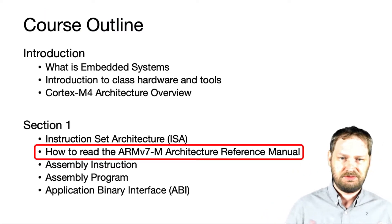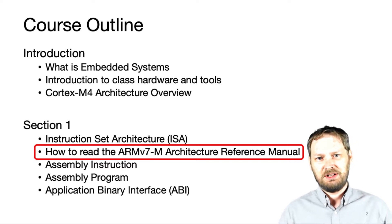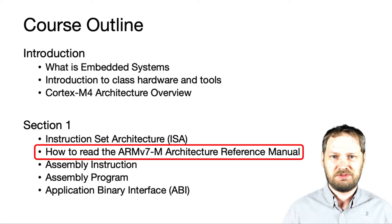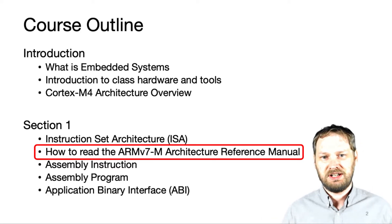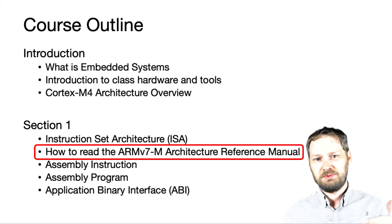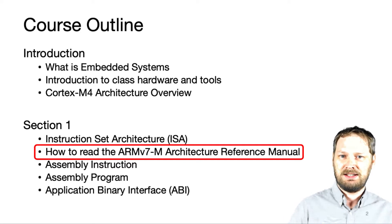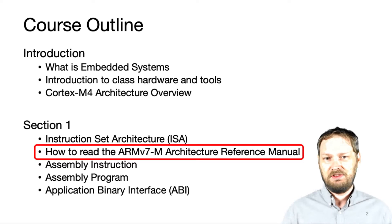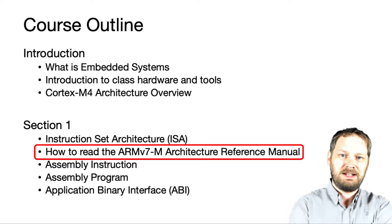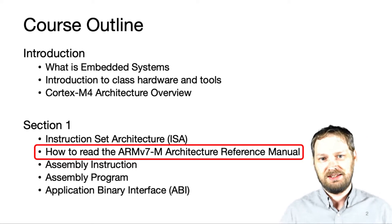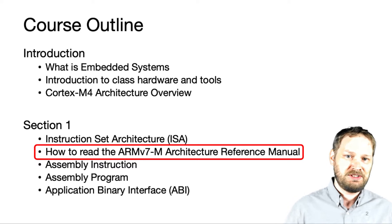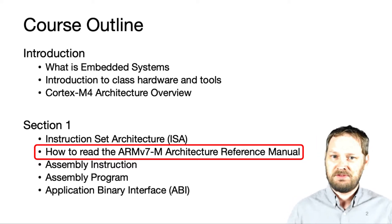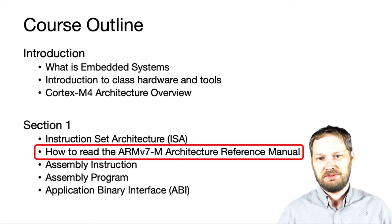All right, so just to recap, we're in section one here. We already went through the instruction set architecture which really defined the structure of the Cortex core. Later on we're going to go through assembly instructions, assembly program, and binary interface. We don't have a lot of time to spend on going through each assembly instruction.